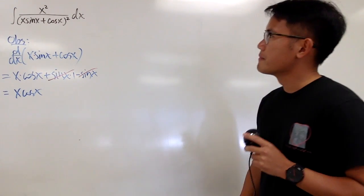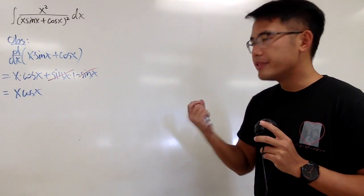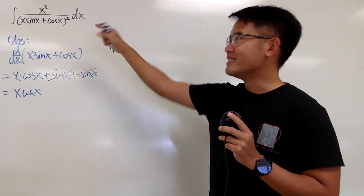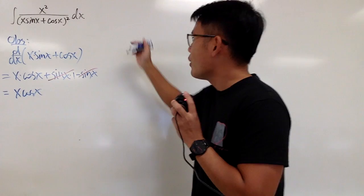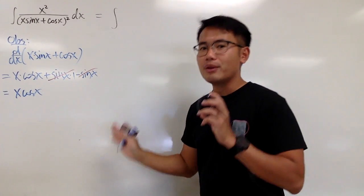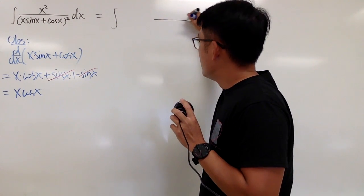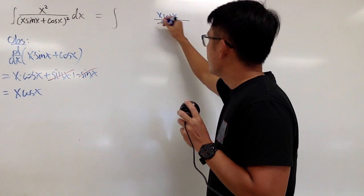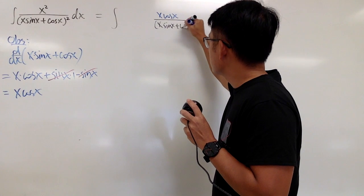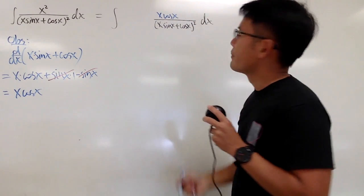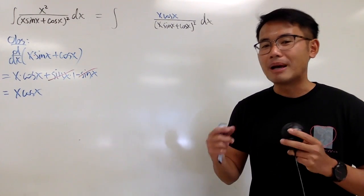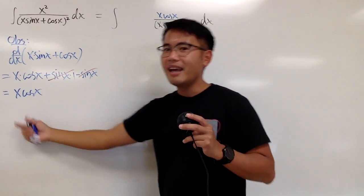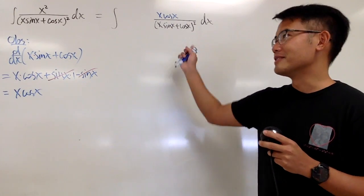If I can somehow come up with x times cos x on the numerator, then I can do a u-substitution to get the integral. But I don't have that, so I'm going to rewrite this integral. I need to introduce cos x to help us out. This is the same as the integral with x times cos x on top and x times sin x plus cos x squared in the denominator. If this is the integral, we can do it by u-substitution — let u equal the inside function. However, this is not the same as the original integral, but we can be smart.